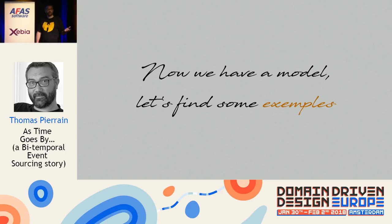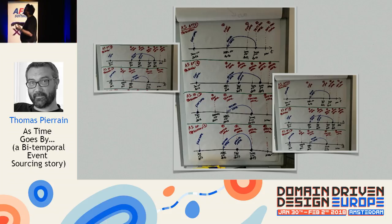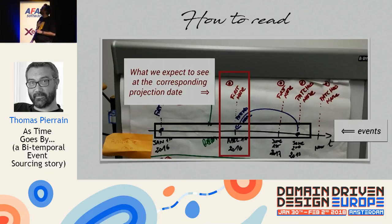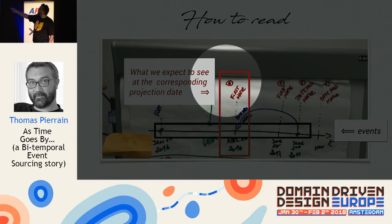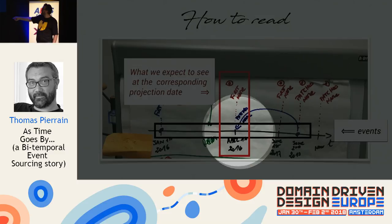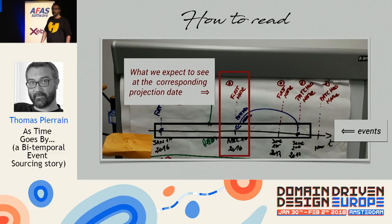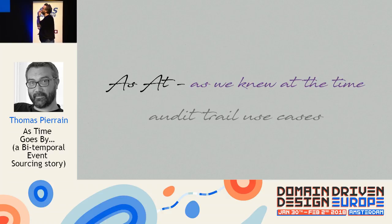Now we had a model — let's find an example and workshop. We did lots of whiteboard sessions with ASAT and ASOF modes. In red on the diagram, it shows what we expect to see at a corresponding projection date. For example: on April 1st, our vision of the fund is 'first name'.